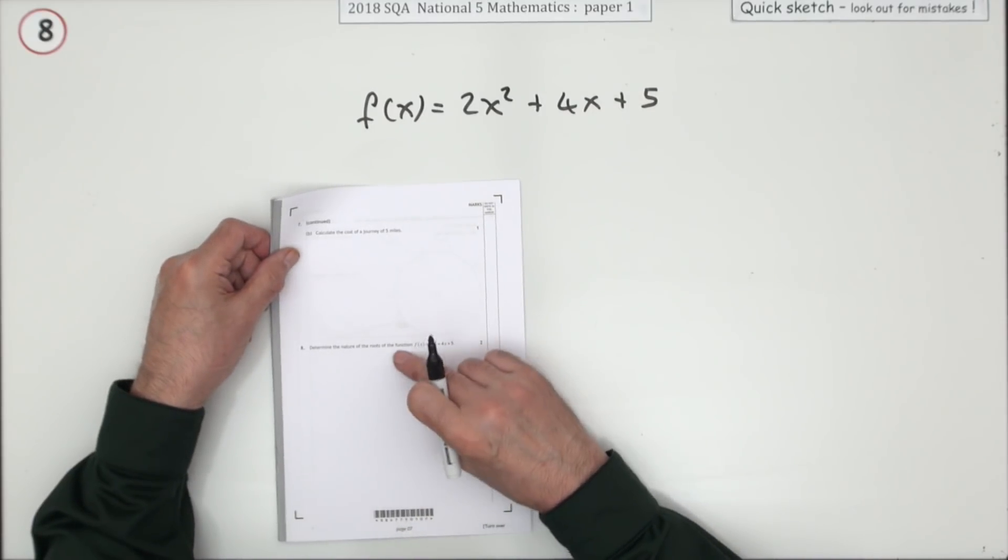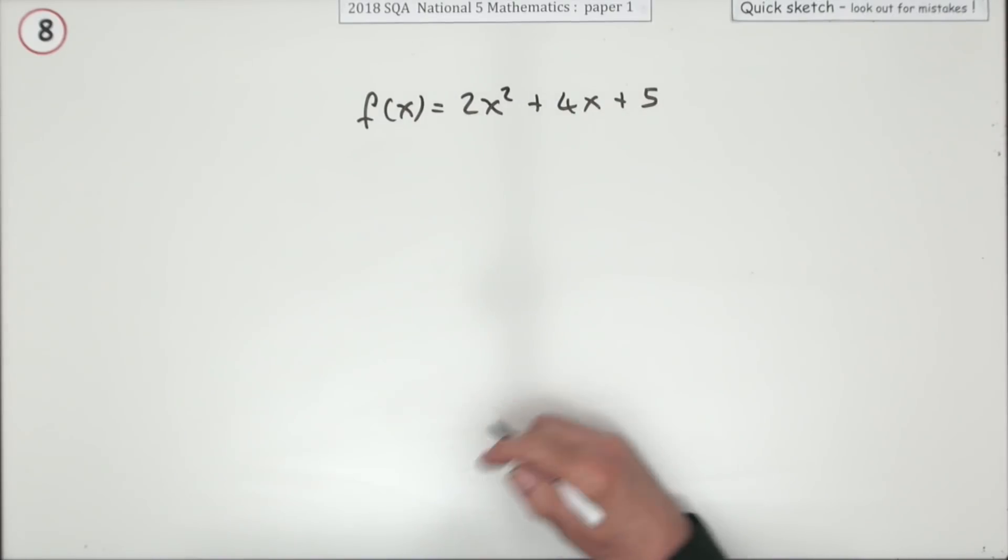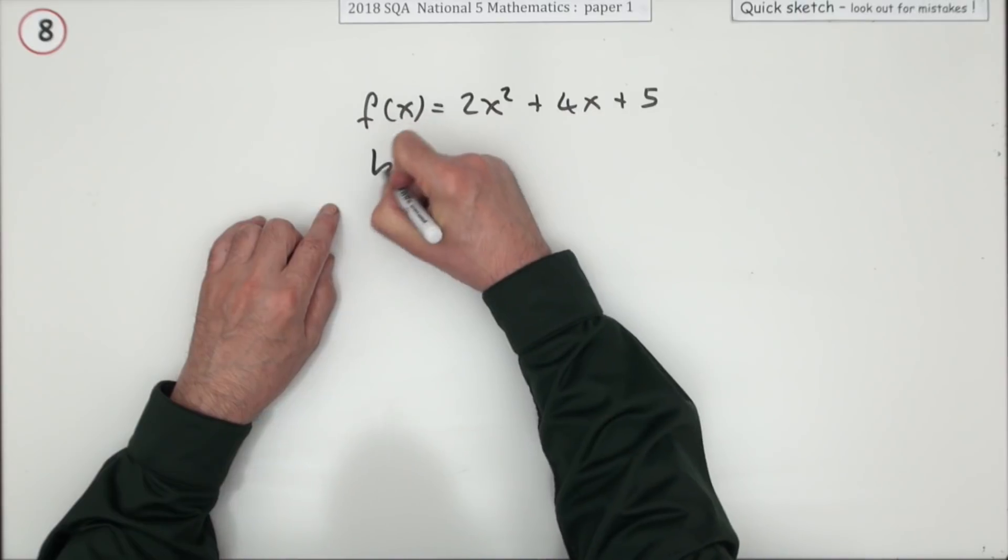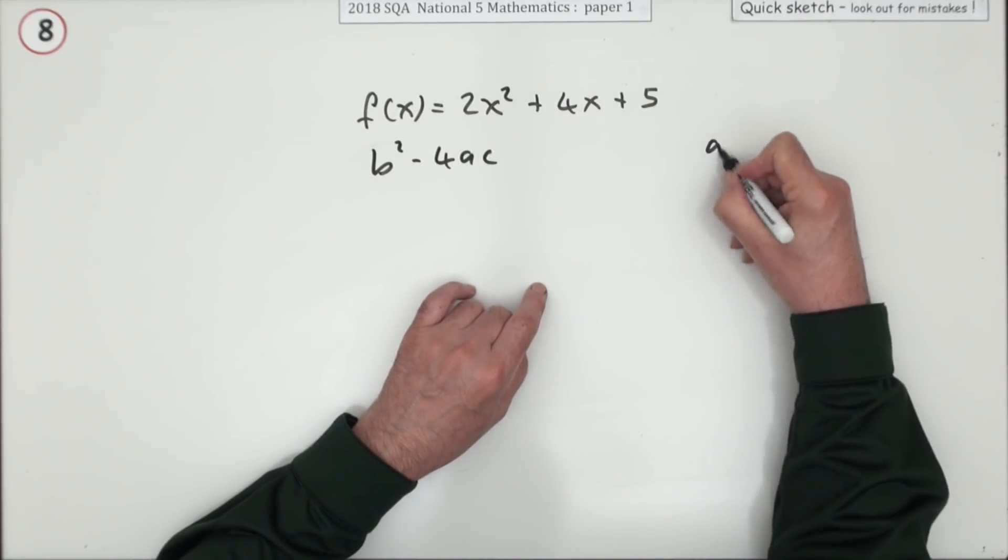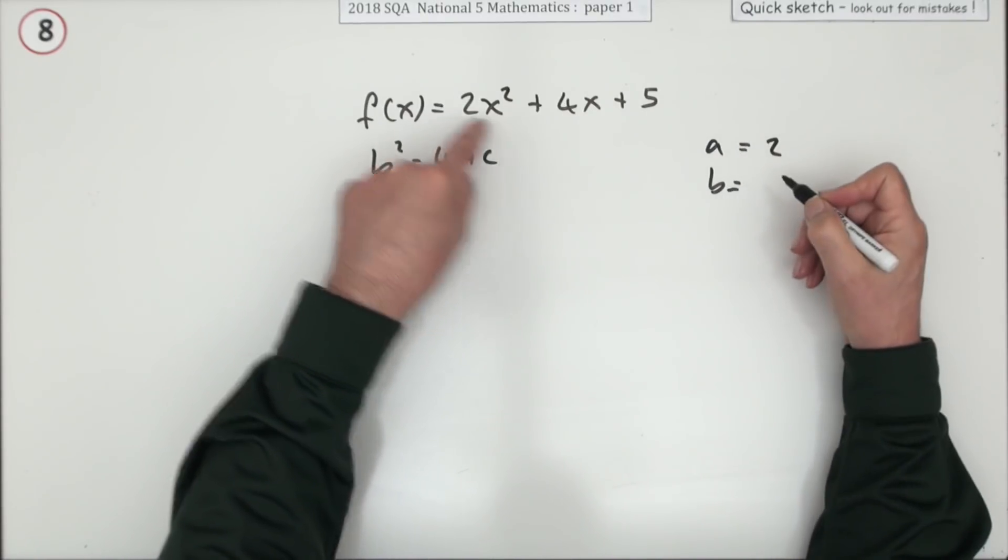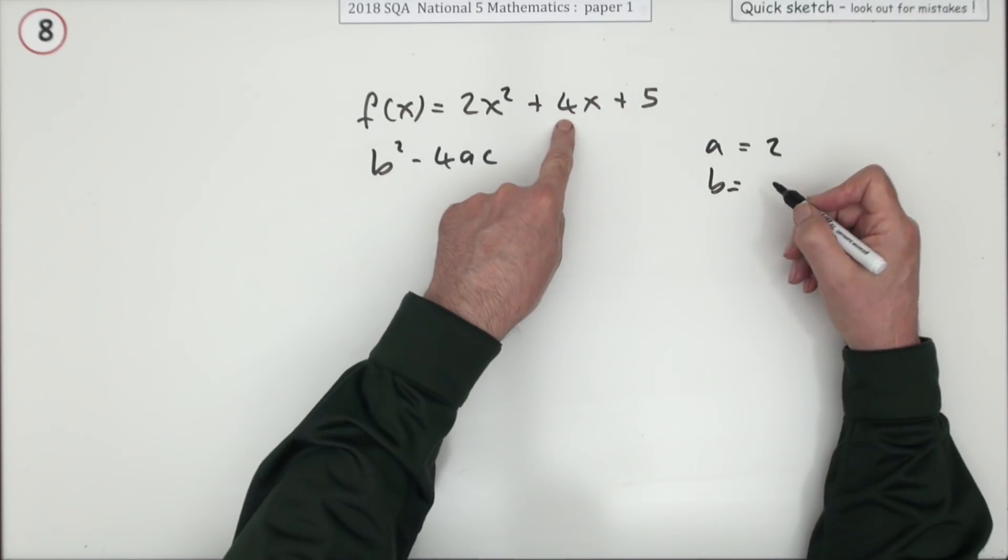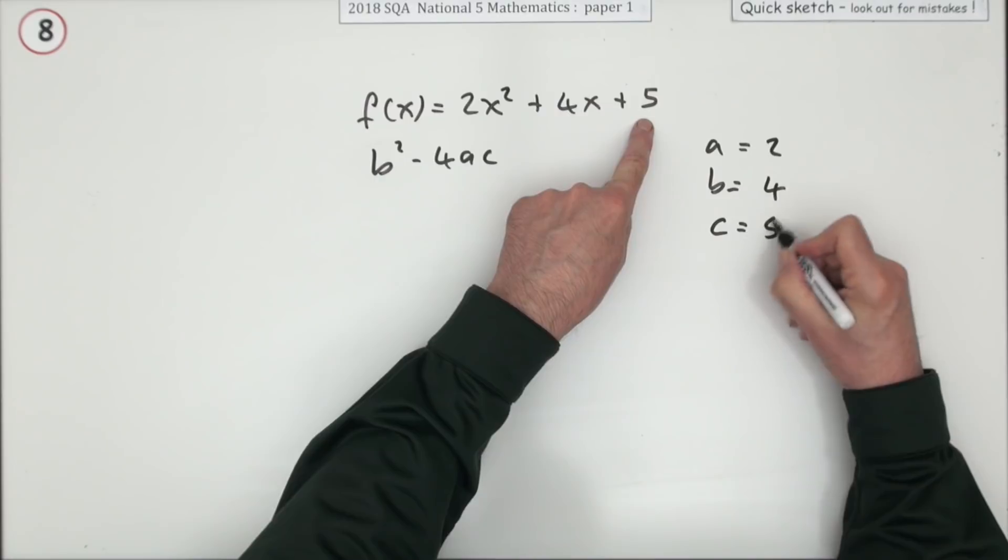Eight, determine the nature of the roots of this function. Well, two marks, you'll be using the discriminant b squared minus 4ac. Just take a, b, know what they are. a means the coefficient, how many x squareds there are. b is the coefficient of x, how many x's there are. And c is the number on its own.